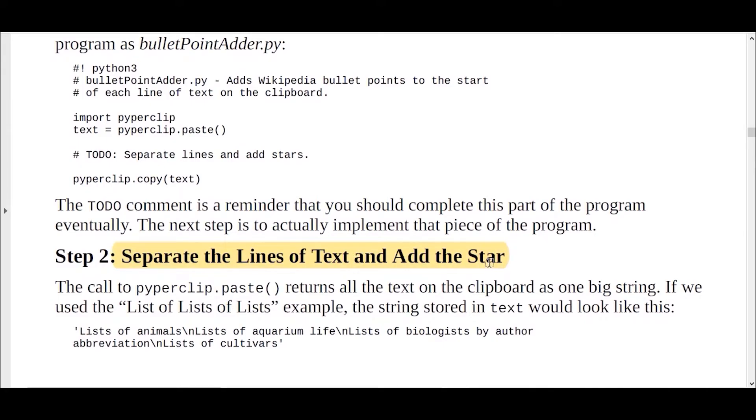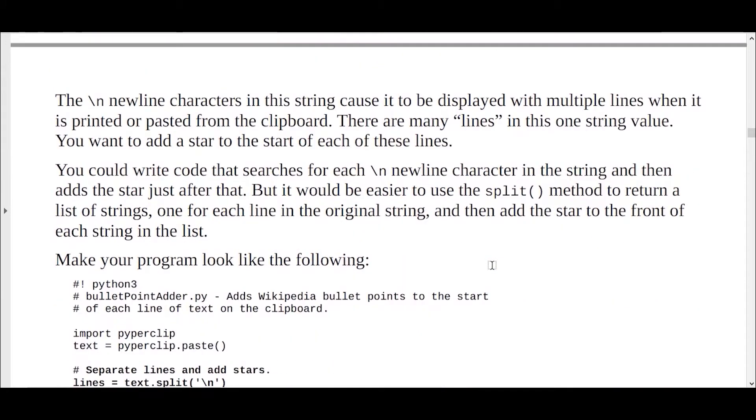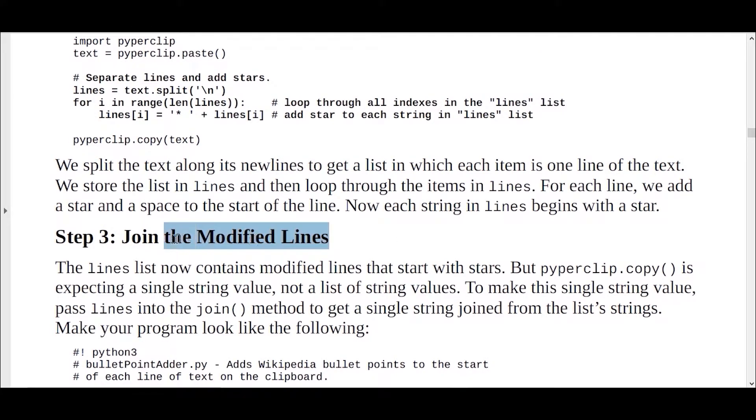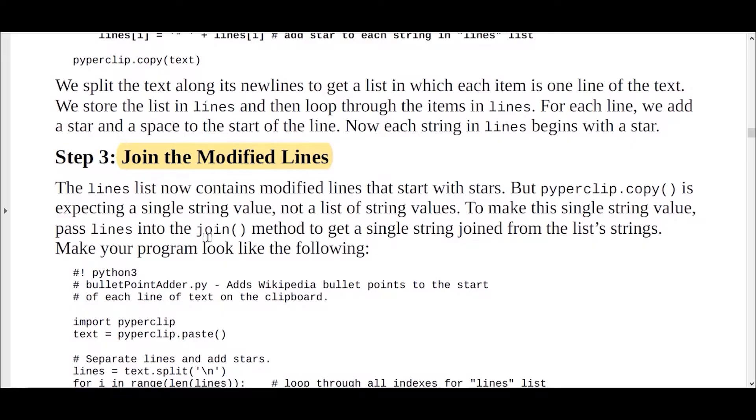After that, as soon as you have copied some text from the clipboard, you need to separate the lines of text in step 2 and then you have to add the star, which is the bullet actually. And after that, then you have to join the modified lines. Because in the program, you have to remove the new line characters and then after that, again, you have to join the modified lines so that you can show them in different lines.